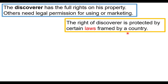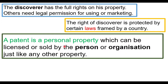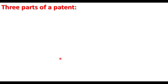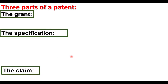Without the permission of the discoverer, patented products cannot be used or marketed by others. The right of the discoverer is protected by laws framed by a country. A patent is a personal property — just as we can sell houses, lands, or vehicles, a patent is a personal property which can be licensed. The license to use the property can be given to another person; the property can be sold just like any other property. There are three parts of a patent: the grant, the specification, and the claim.